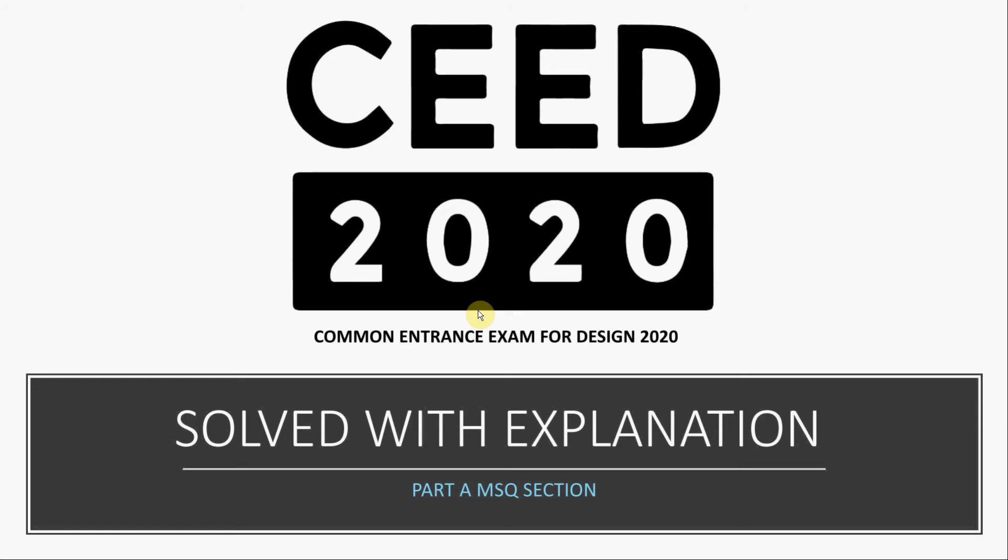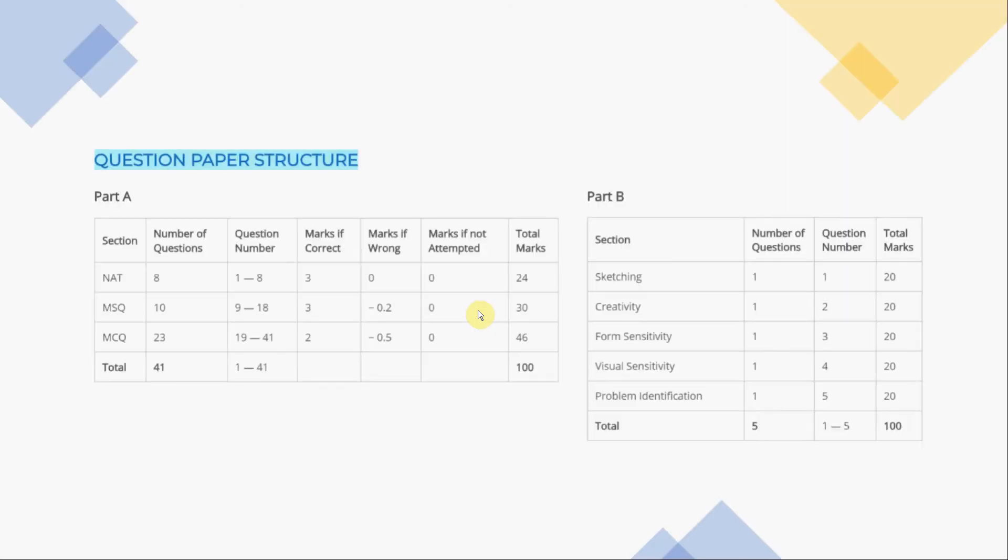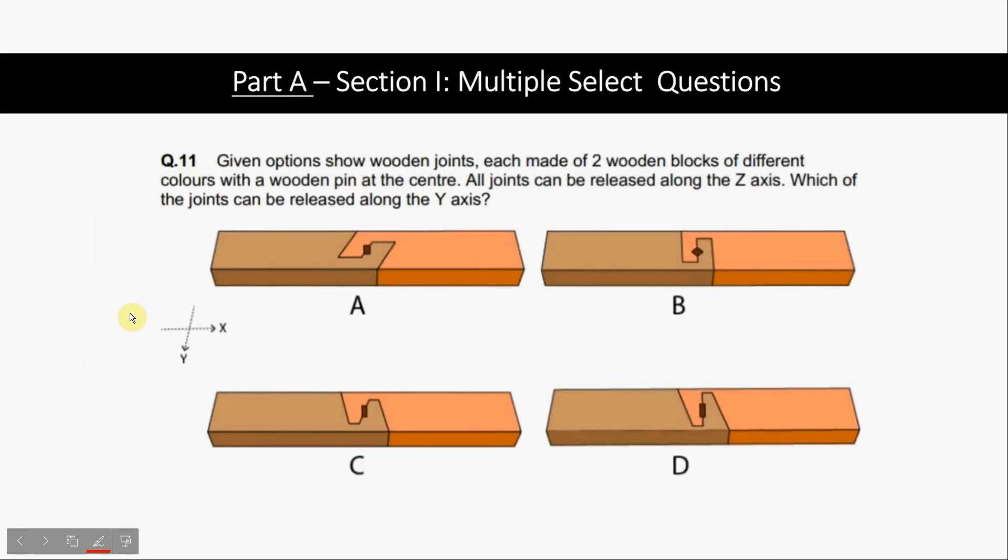Hey guys, hope you're doing good. So Part A, question 11: given options show wooden joints, each made of two wooden blocks of different colors with a wooden pin at the center. All joints can be released along the Z axis. Which of the joints can be released along the Y axis?